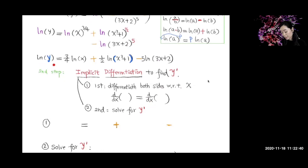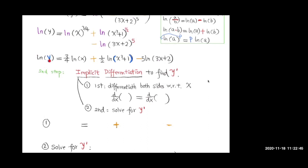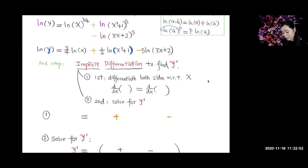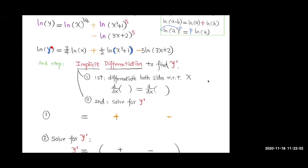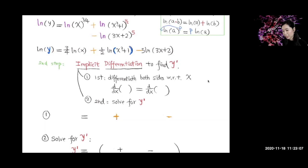Let's differentiate the left side with respect to x. The outer function is the ln function, so differentiating the outer function gives 1 over y — 1 over whatever is inside the function. Remember the derivative of ln(x) is 1 over x.